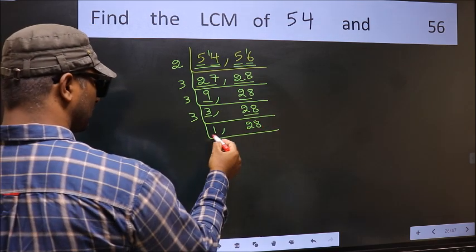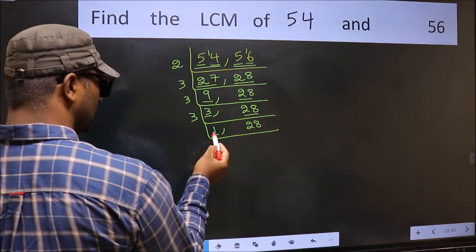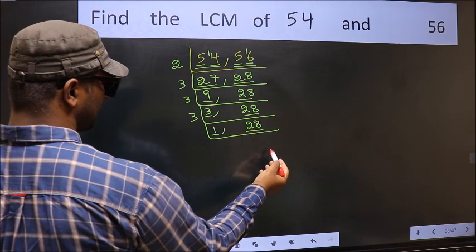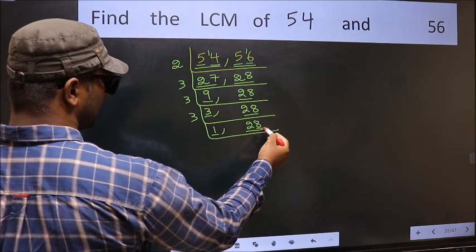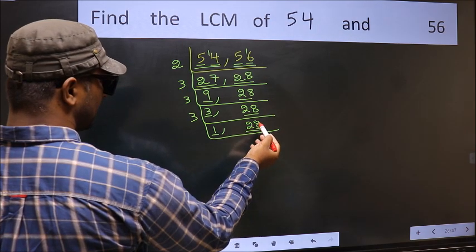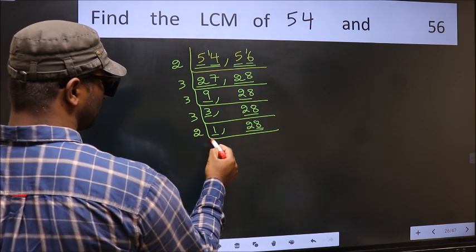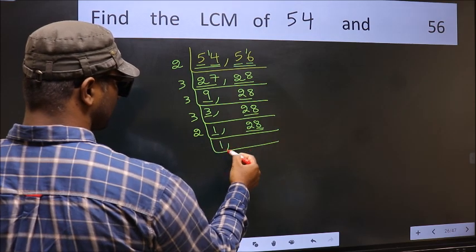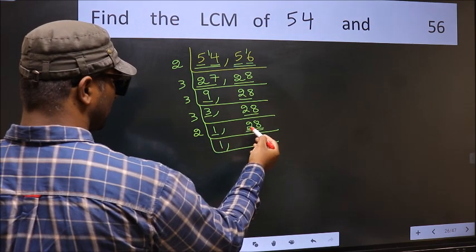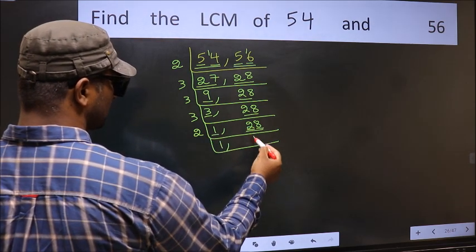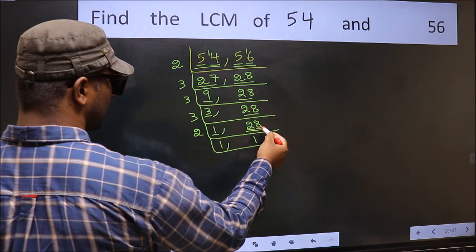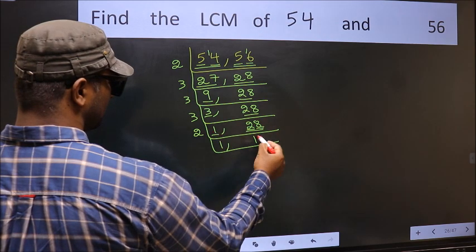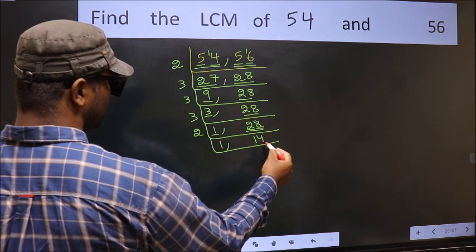Now we got 1 here, so focus on the other number 28. Last digit 8 is even, so take 2. First number 2 — when do we get 2 in the 2 table? 2×1 is 2. The other number 8 — when do we get 8 in the 2 table? 2×4 is 8.